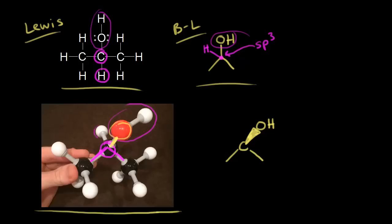This hydrogen is going away from us in space - the bond is going into the paper, or behind the paper. We represent that with a dash, showing that this hydrogen is going away from us. So we imagine our flat sheet of paper with the OH coming out at us and that hydrogen going away from us.